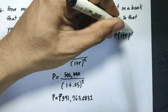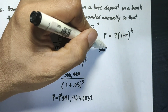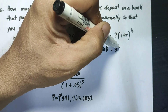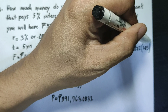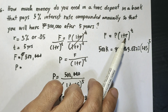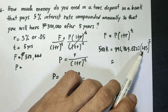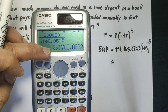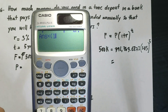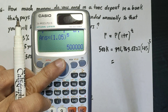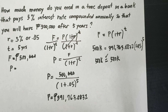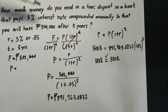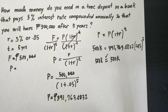To verify the answer, substituting back into F equals P times (1 plus R) raised to T: F equals 391,763.08 times 1.05 raised to 5, which equals 500,000 pesos. Since both sides are equal, our answer is correct. That's all for today — I hope you enjoyed learning about problems involving simple and compound interest. Special thanks to Mr. Eldrian Tlican. Goodbye!